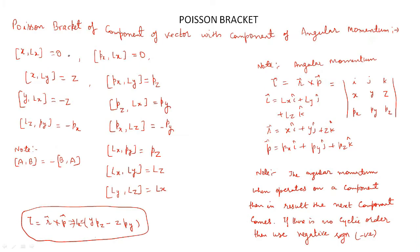Now we will discuss the Poisson bracket of the components of the angular momentum vector. Angular momentum is represented by L and equals r cross p, where r is the position vector and p is the linear momentum. So r = xi + yj + zk and p = px*i + py*j + pz*k. Writing L = r cross p in determinant form with rows (i, j, k), (x, y, z), (px, py, pz), we can find Lx, Ly, and Lz. For example, Lx = y*pz minus z*py.